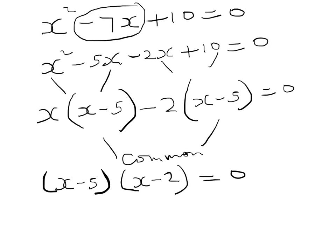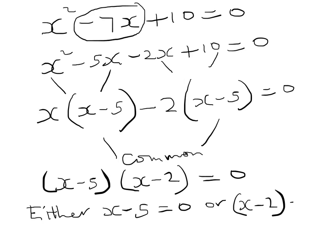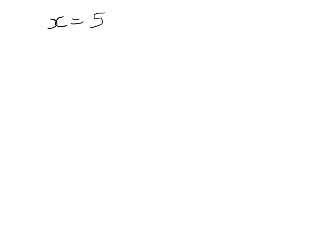We have two factors multiplying together to give zero. This means either x minus 5, the first factor, is equal to zero, or x minus 2, the second factor, is equal to zero. So this gives x equals 5 or x equals 2.